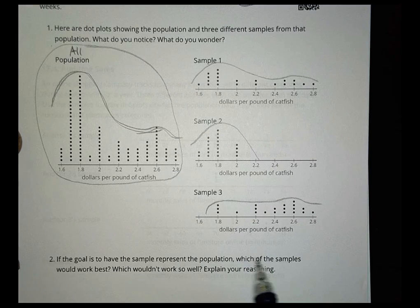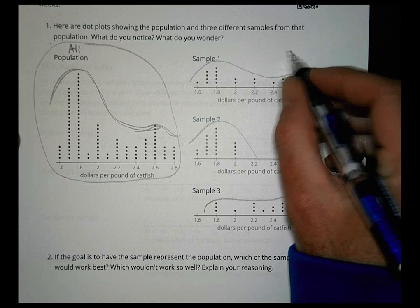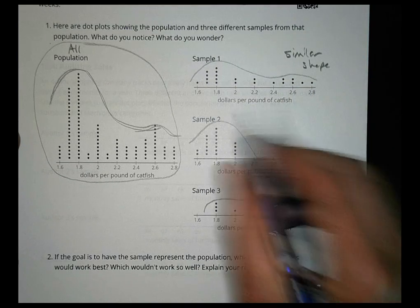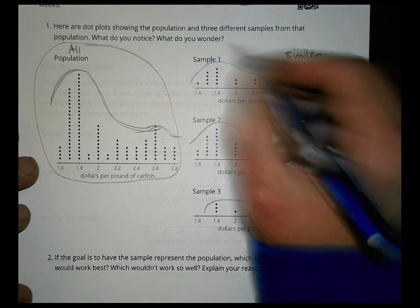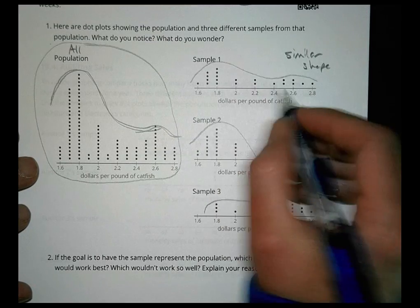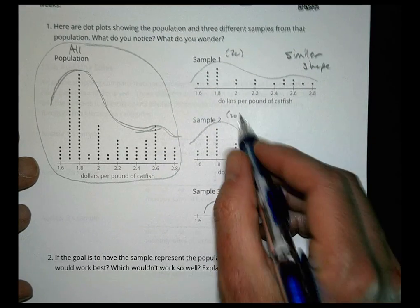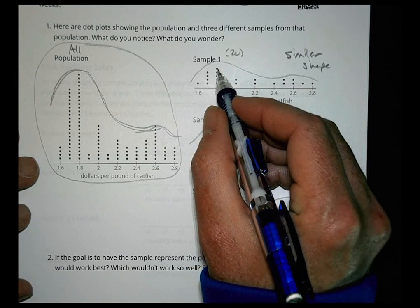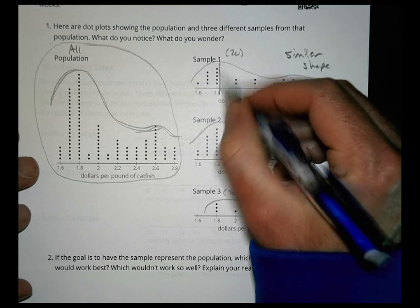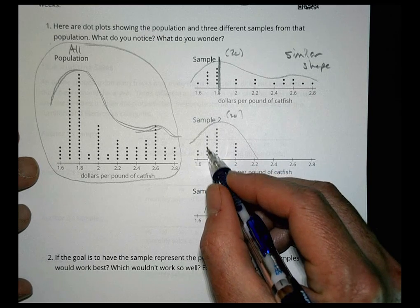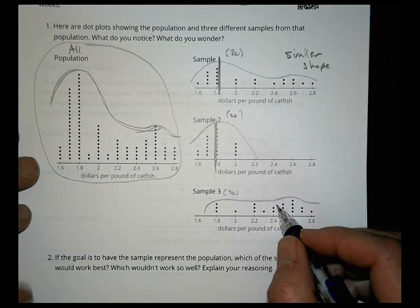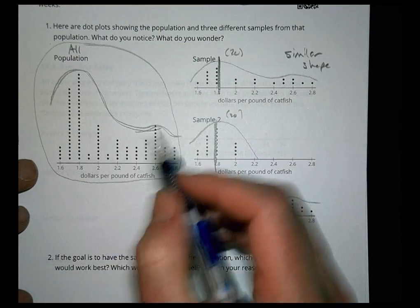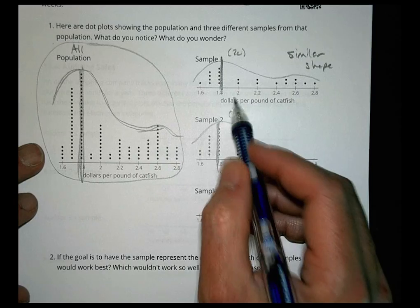Each sample has 20 data points. Looking at the center: for sample 1, counting to the 10th point puts the center right around the middle of the distribution. For sample 2, the center lands a bit to the right. For sample 3, the center is off to a different location. Samples 1 and 2 have centers similar to the population's center.